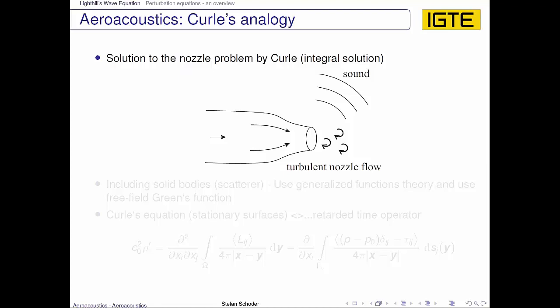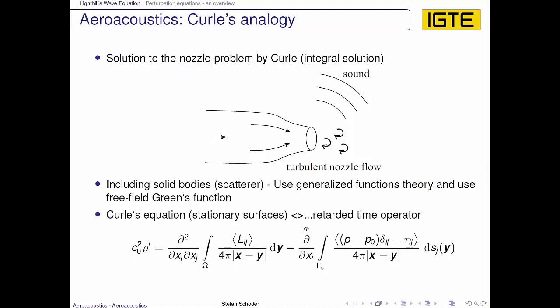The solution to the nozzle problem that we would actually like to consider was then done by Curle. He also did an integral solution and included solid bodies or scatterers by using generalized function theory and also a free-field Green's function. He kind of tailored the PDE and then applied the free-field Green's function to it. Curle's equation was able to include stationary surfaces. This was the next evolution step of Lighthill's analogy.